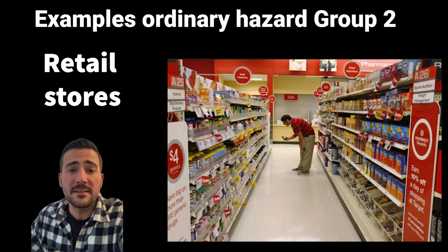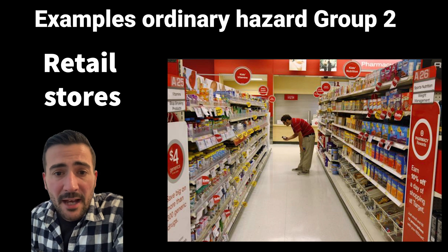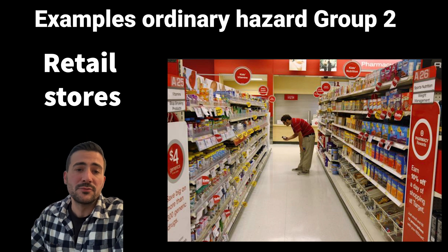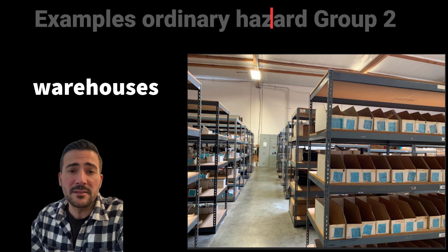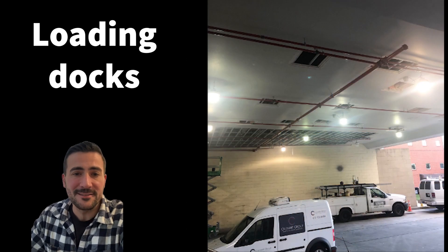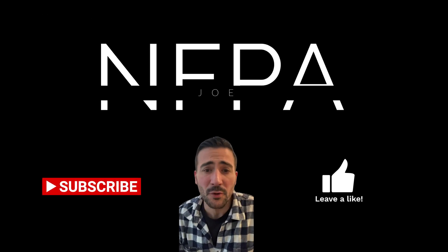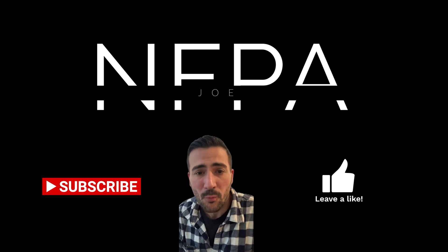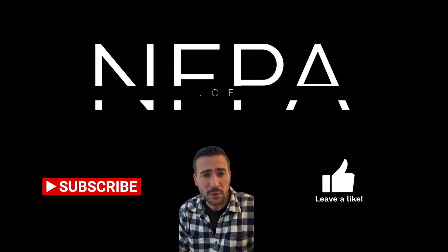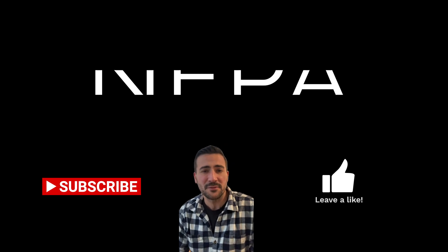Some examples of ordinary hazard Group 2 include retail stores, warehouses, and loading docks. Storage stockpiles of contents with moderate rates of heat release do not exceed 12 feet; if contents have a high heat release, storage will max out at eight feet. That covers ordinary hazard Group 1 and 2.